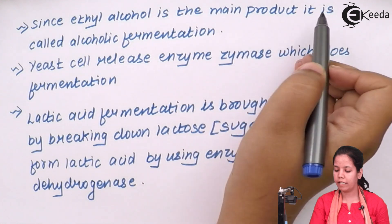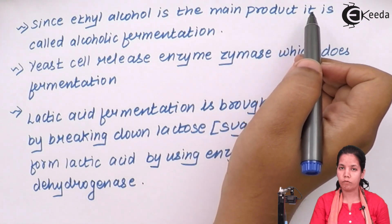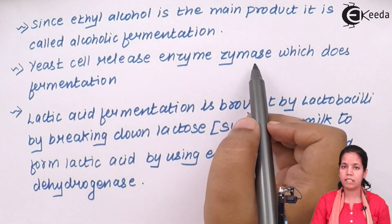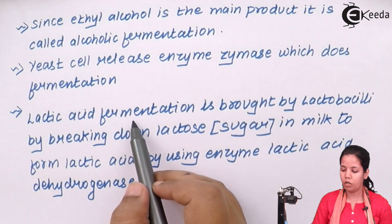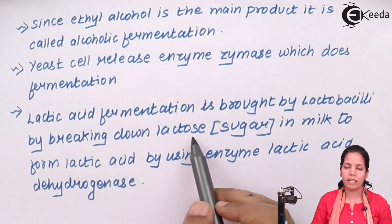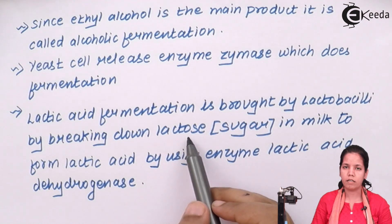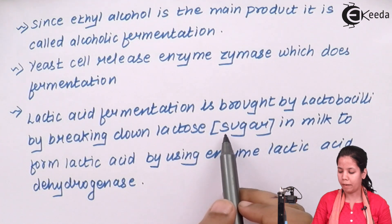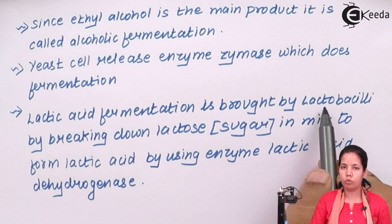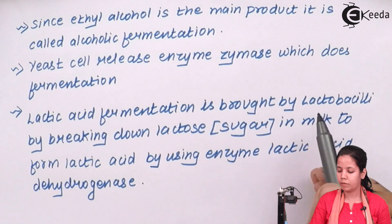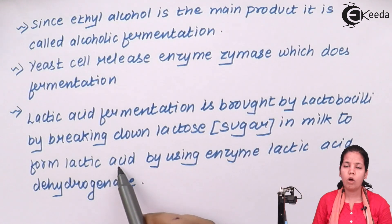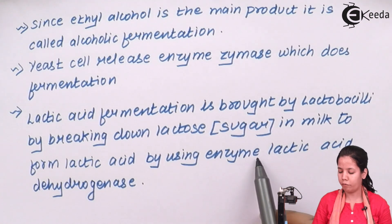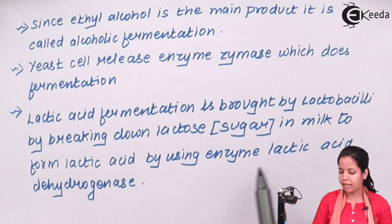Since ethyl alcohol is the main product in alcoholic fermentation, it is also called alcoholic fermentation. Each yeast cell or Saccharomyces cerevisiae releases an enzyme termed zymase, which carries out the fermentation process. Another kind of fermentation is lactic acid fermentation. Milk contains a sugar called lactose — a partner of glucose — and this lactose is acted upon by Lactobacillus bacteria during curd formation. Lactic acid is formed, giving the sour and creamy texture to curd. The enzyme responsible for converting lactose sugar to lactic acid is lactic acid dehydrogenase.